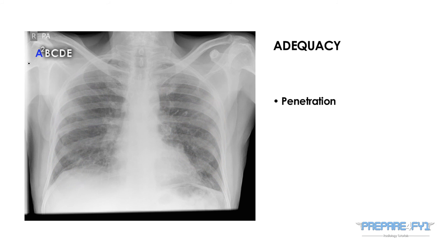P stands for penetration. You should just be able to see the outline of the vertebral bodies through the cardiac silhouette.